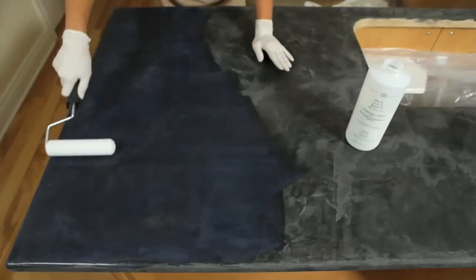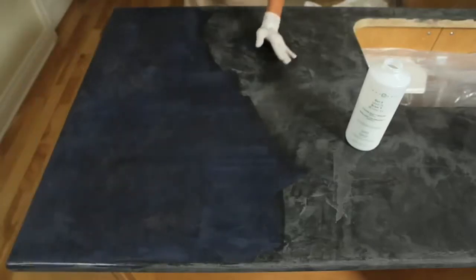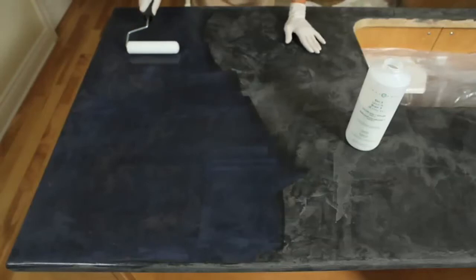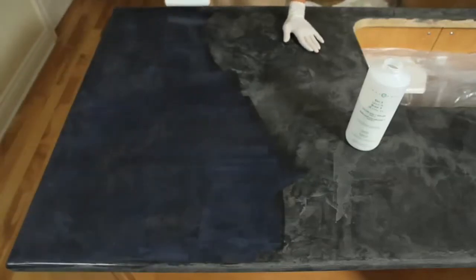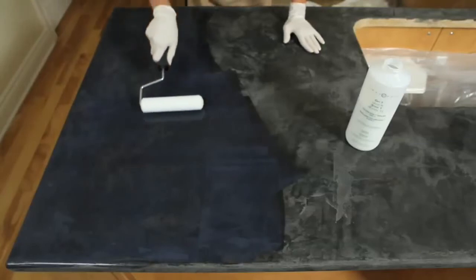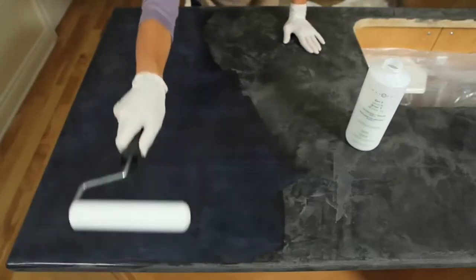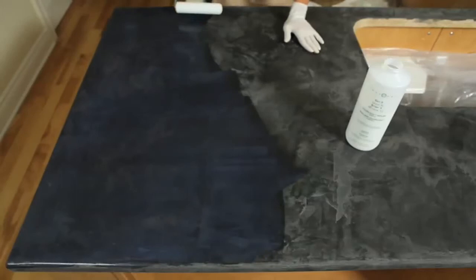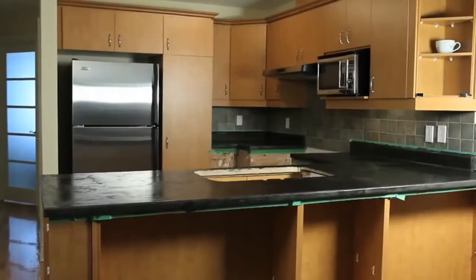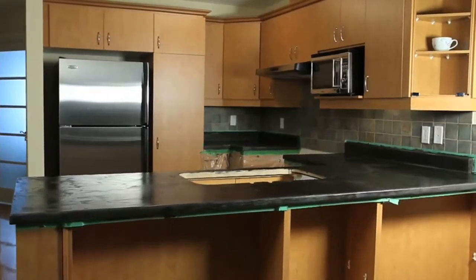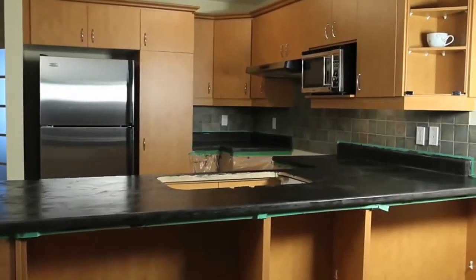Then, gently back roll the surface using only the weight of the roller. Set aside any leftover sealer and allow it to dry in the bottle before disposing of it in the garbage. Allow the surface to dry for approximately 4 hours or until the surface is completely dry.